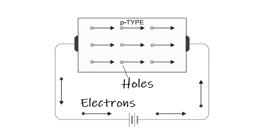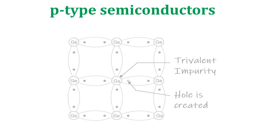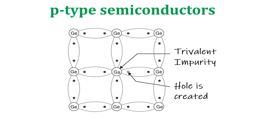It is because 3 valence electrons of gallium atom can form only 3 single covalent bonds with 3 germanium atoms as shown in figure. In the 4th covalent bond, only germanium atom contributes 1 valence electron while gallium has no valence electron to contribute as all its 3 valence electrons are already engaged in the covalent bonds.